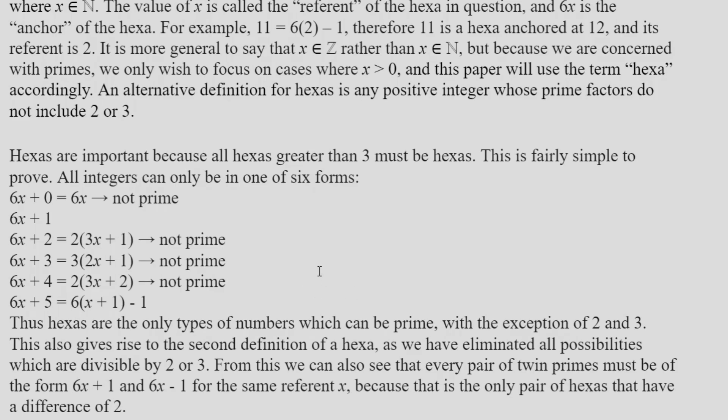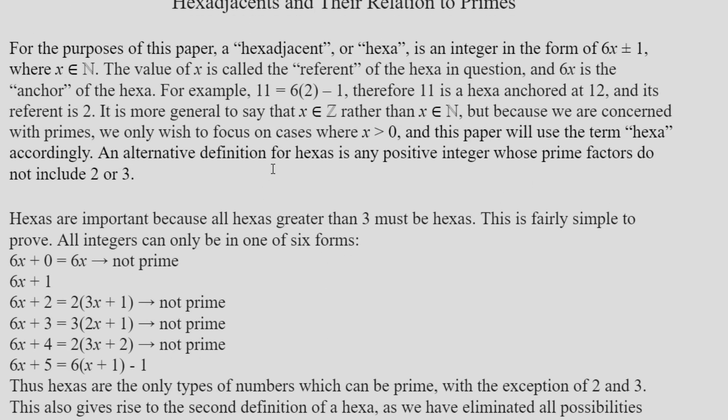So firstly, I define these terms: a hexadjacent, or hexa for short, and that is any integer of the form 6x plus or minus 1. And technically speaking, this could be a positive or a negative integer, but since we're talking about primes, we're really mostly concerned with cases where x is a natural number. That is, it has to be a positive integer.